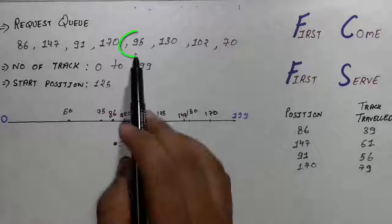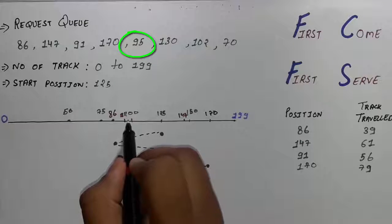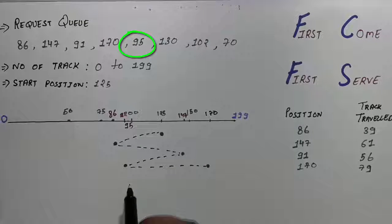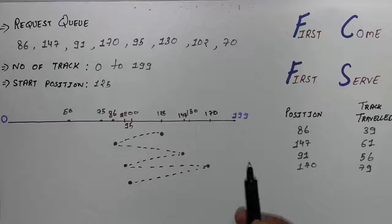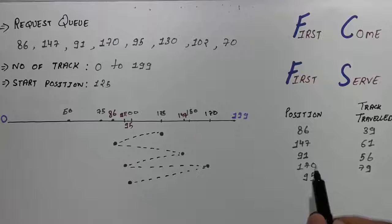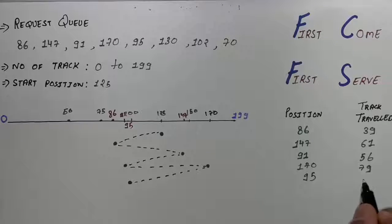Now our next position is 95. So 95 will be somewhere here. Our head will move here. So then draw a line. You have to draw a solid line so that you can easily show where the header is moving. So now we are on 95 and the difference between 170 and 95 is 75.